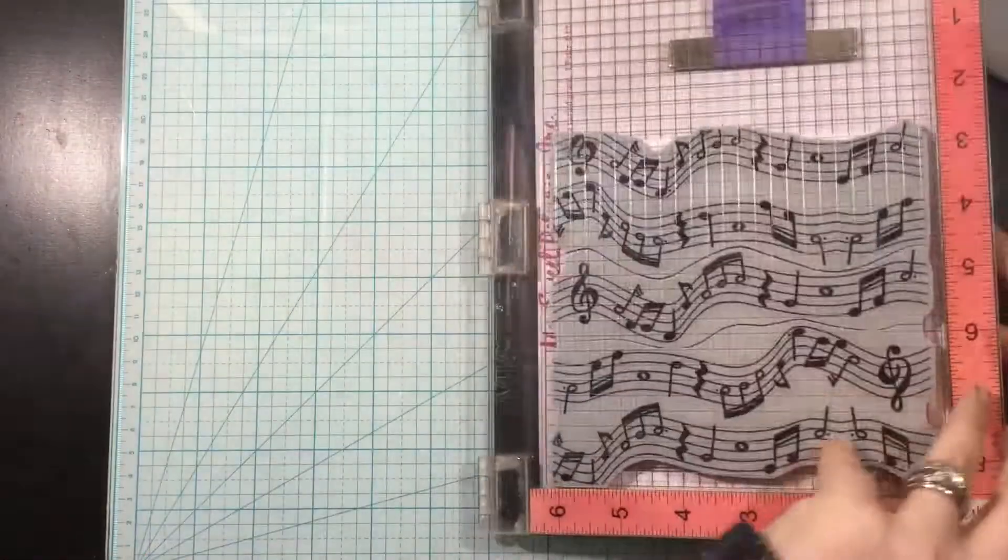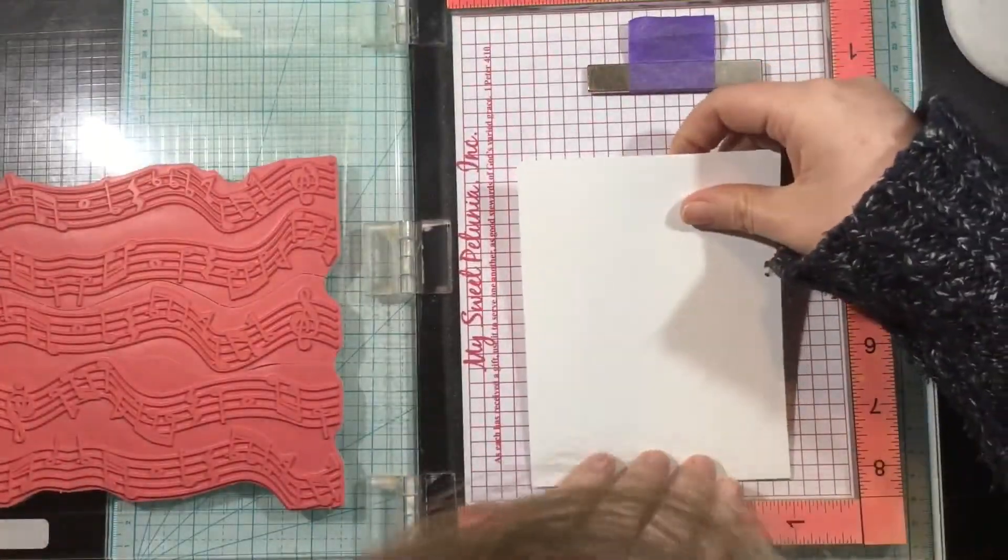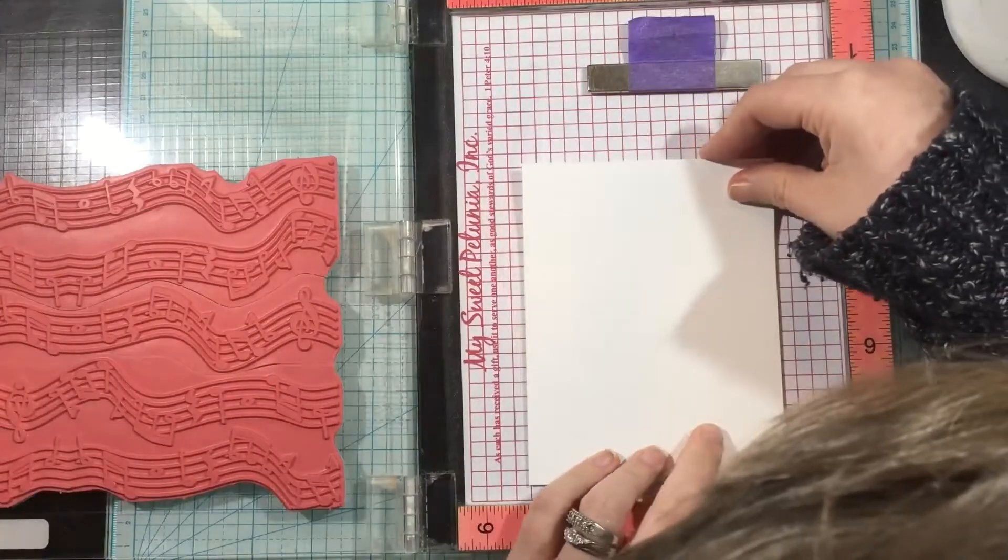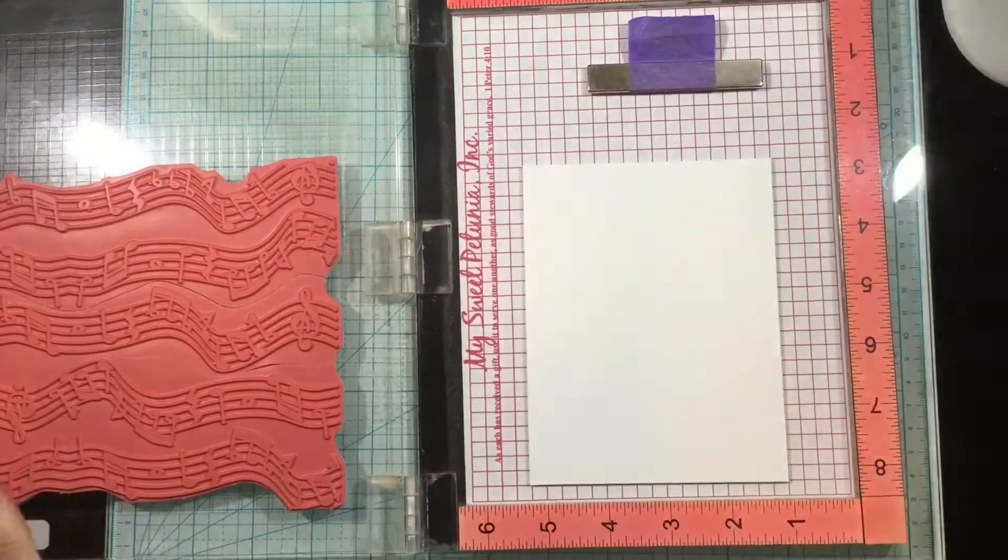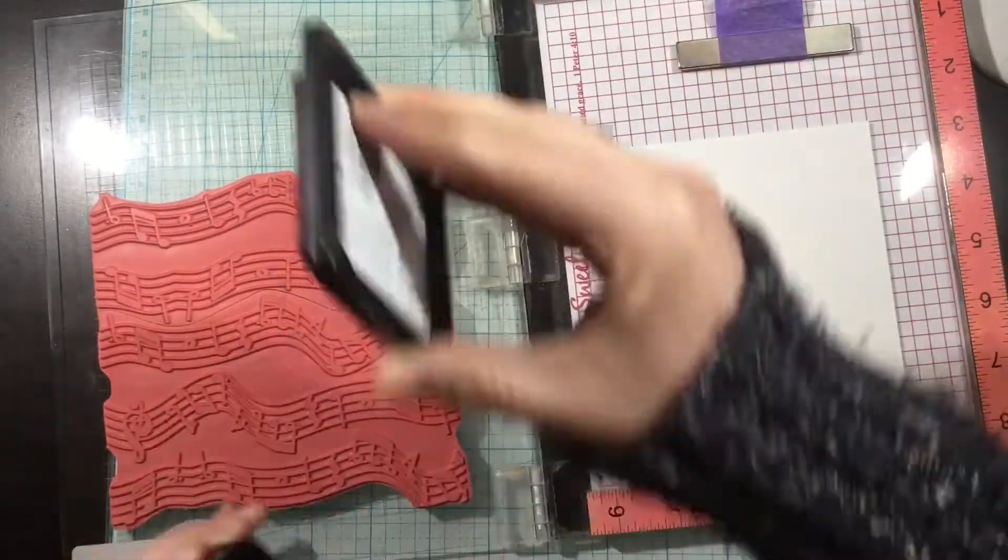I'll add some removable adhesive to the back and then I can close my MISTI kind of like backwards and it will adhere that cardstock onto the back of my MISTI.